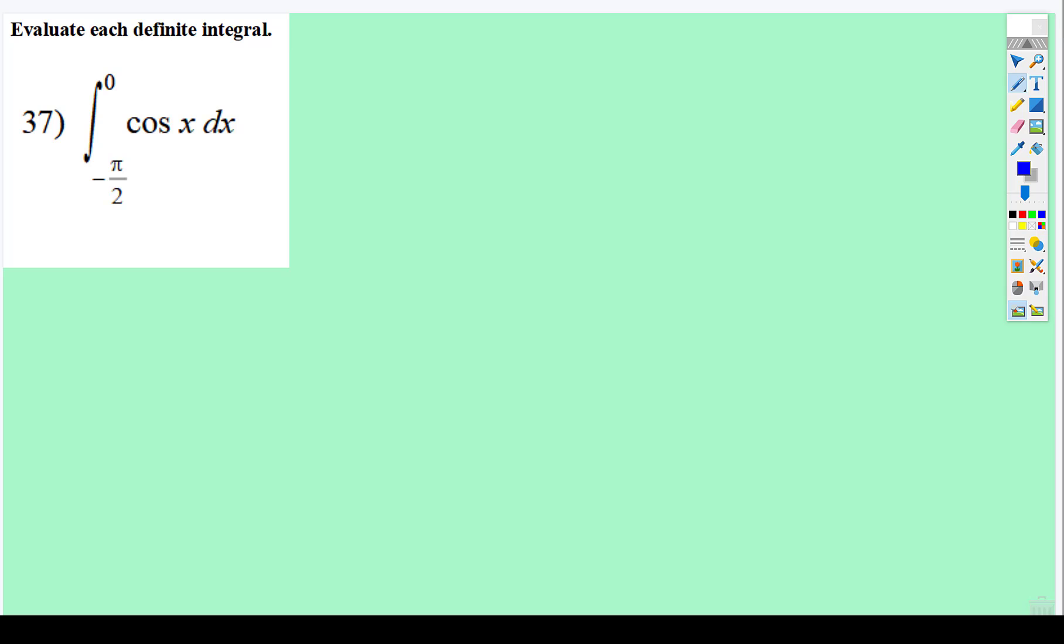Okay, so if you look back at the functions, the cosine function, its derivative is negative sine.